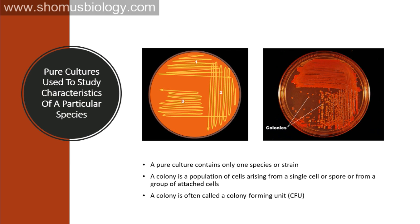Now it's time to talk about culture techniques — pure cultures and subcultures. Pure cultures are used to study characteristics of a particular species. A pure culture means an agar plate or broth containing only one species of bacteria — only one type of bacterial colony is visible, not many types together. We use pure culture isolation techniques because it is very easy to contaminate a plate of bacterial culture, so it's very important to obtain only pure culture.